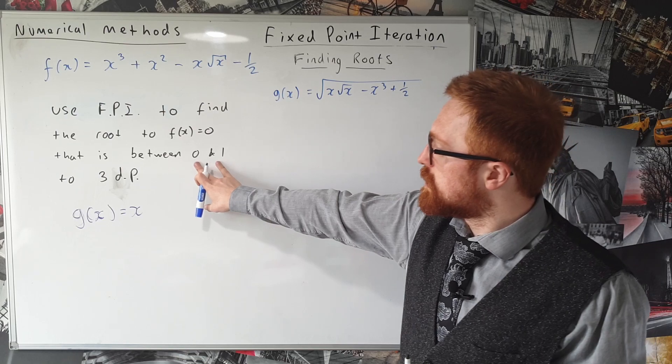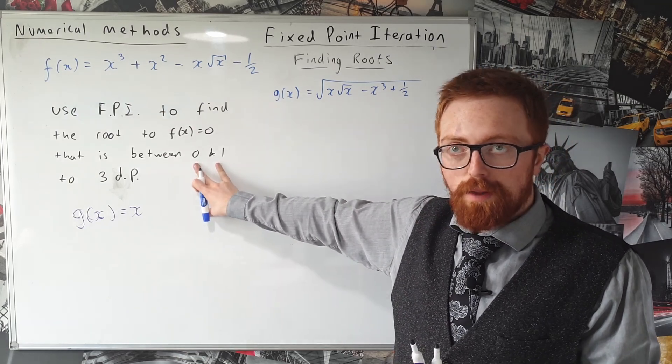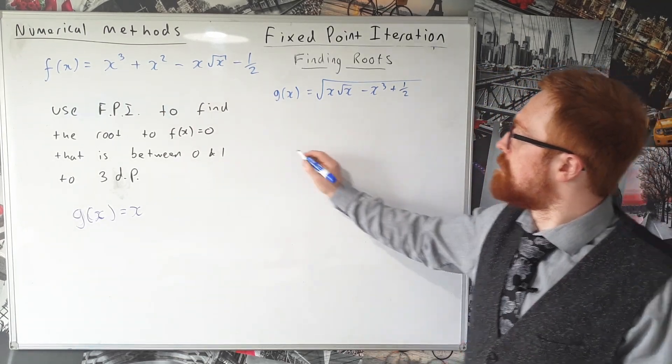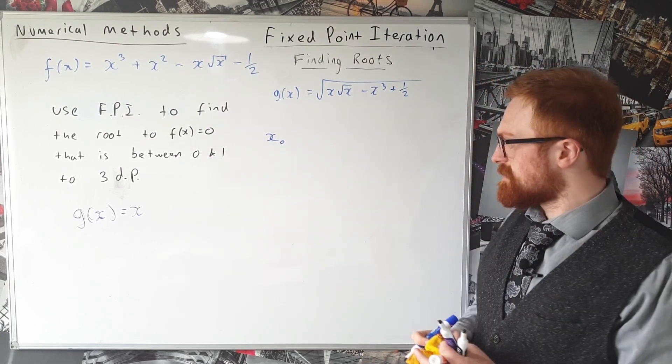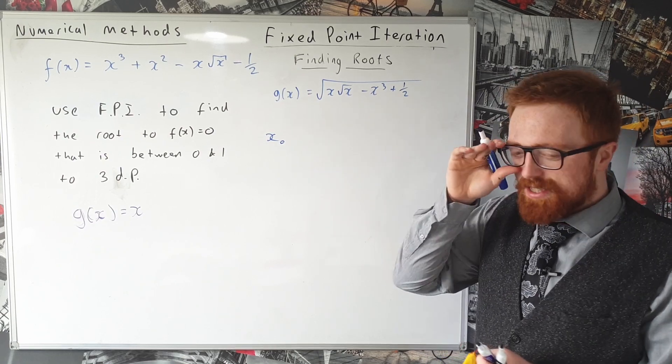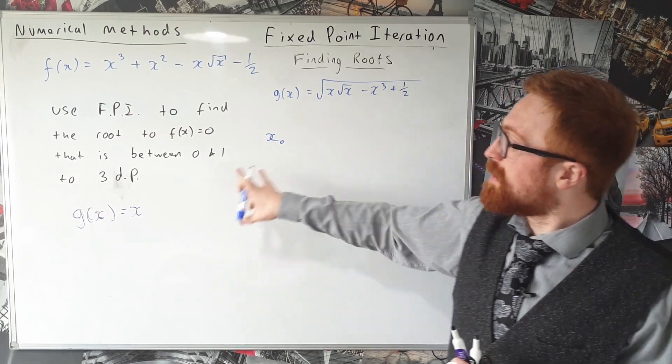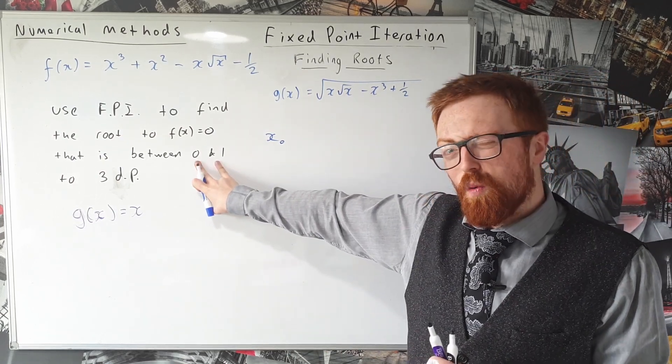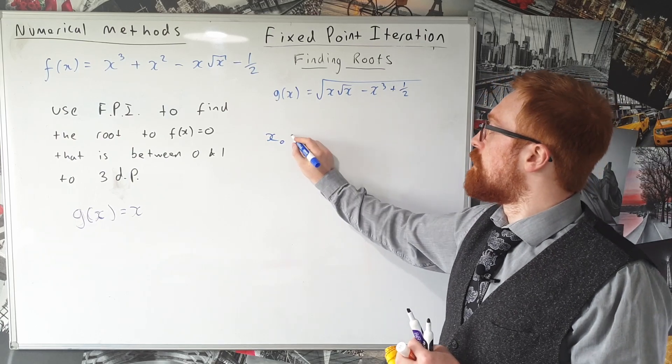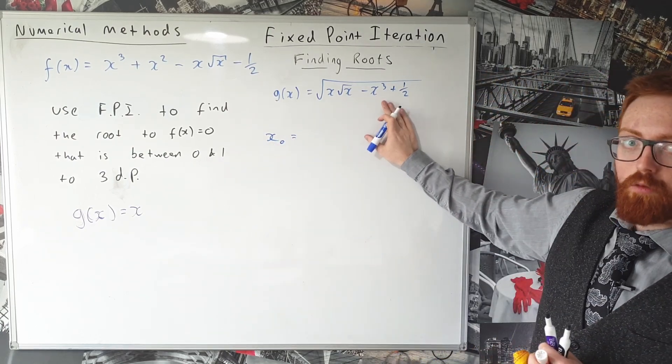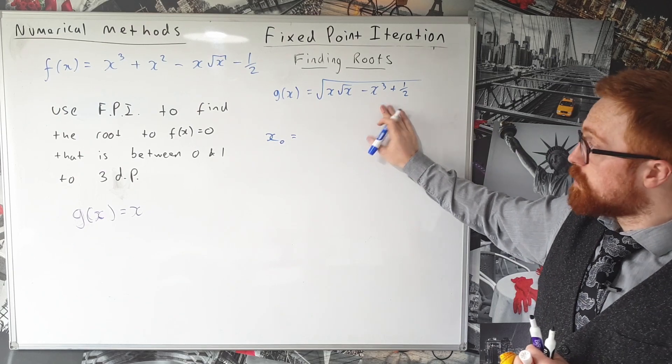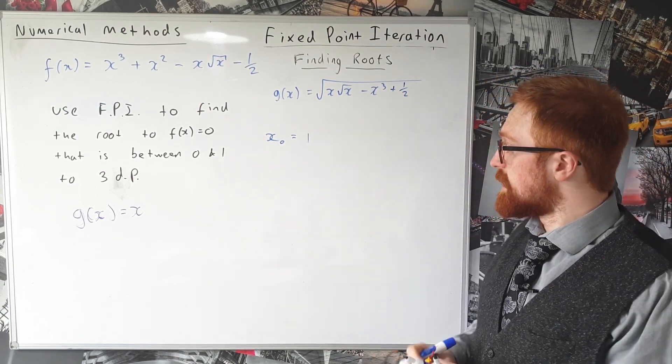Now we're told that our root is between zero and one, and so our first step is to make a guess at what x₀ is going to be. Now again in an exam question you might be asked this or you might be asked to infer where to start from here. But for us, because I know it's between zero and one and we're not going to run into any problems if x equals one, I'm just going to start with one because it's nice and easy.